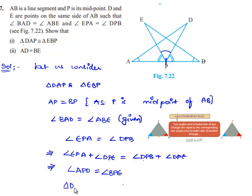According to ASA property, triangle DAP is congruent to triangle EBP.